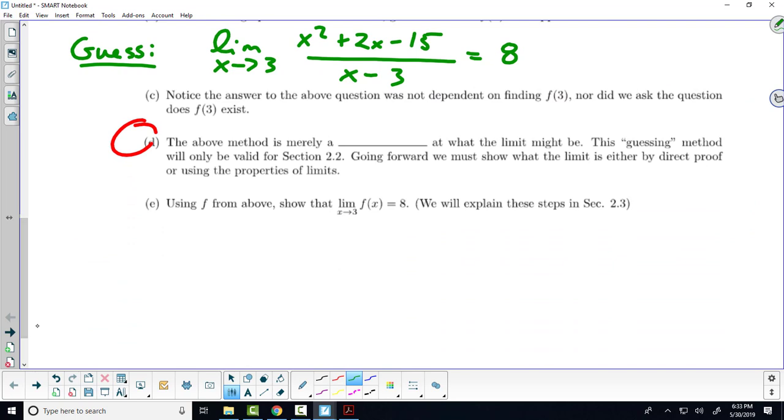Alright. The above method, so here we just said this, the above method is merely just a guess. This is huge for me. If you, at the end of the day, not at the end of today, that's fine. If you, by the end of this chapter, think limits is just about plugging in tiny numbers into a calculator, you're wrong. So this is just a guess method, this table of values.